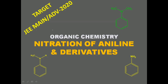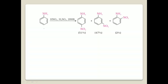Hello students and friends. In this video, I will discuss the nitration of aniline and derivatives. Aniline on nitration gives 51% para product, 2% ortho product, and 47% meta product. Now, this NH2 is an electron-donating group, so this electron-donating group is an ortho-para directing group.